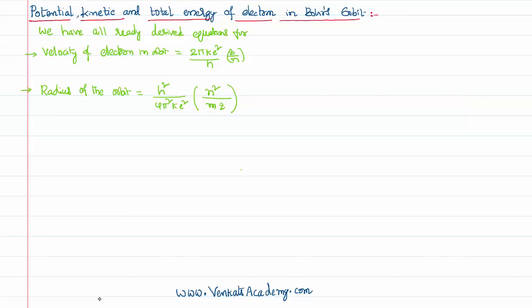Hello everyone, welcome to this video lesson. In this video lesson, we want to derive an equation for potential energy, kinetic energy, and the total energy of an electron revolving in a specific Bohr's orbit. To derive these equations, we need to know the equation for velocity of an electron and the radius of the orbit.